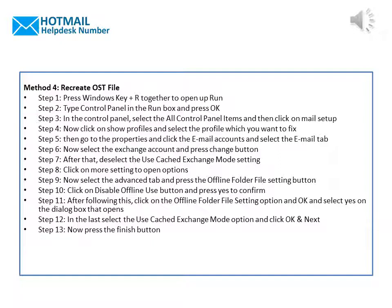Step 5: Then go to Properties and click Email Accounts and select the Email tab. Step 6: Now select the Exchange Account and press the Change button. Step 7: After that, deselect the Use Cached Exchange Mode Settings. Step 8: Click on More Settings to open Options. Step 9: Now select the Advanced tab and press the Offline Folder File Settings button.